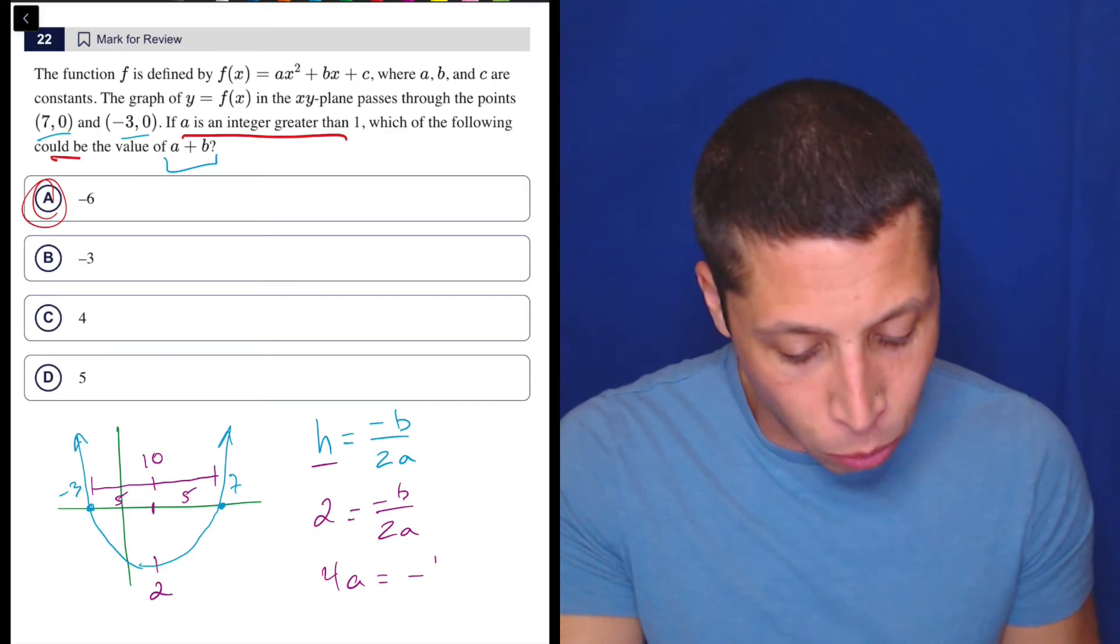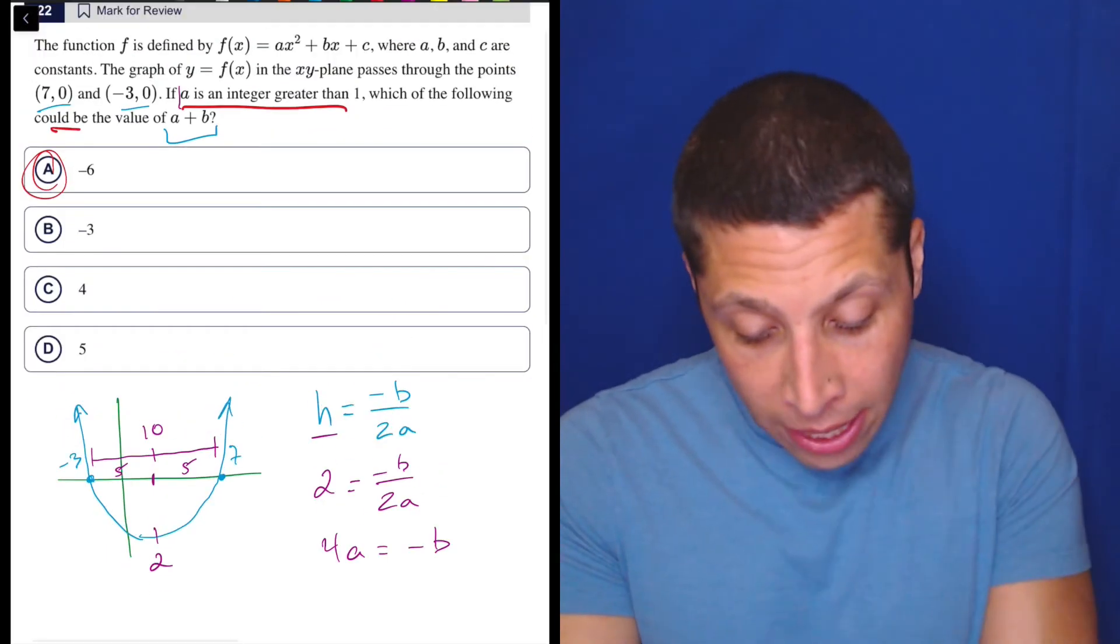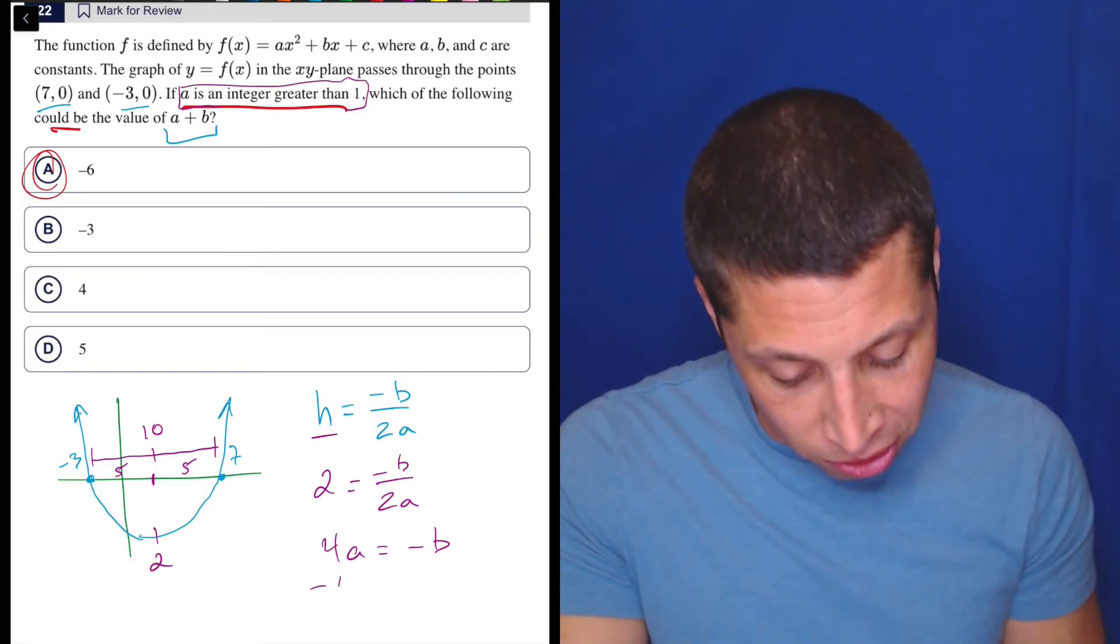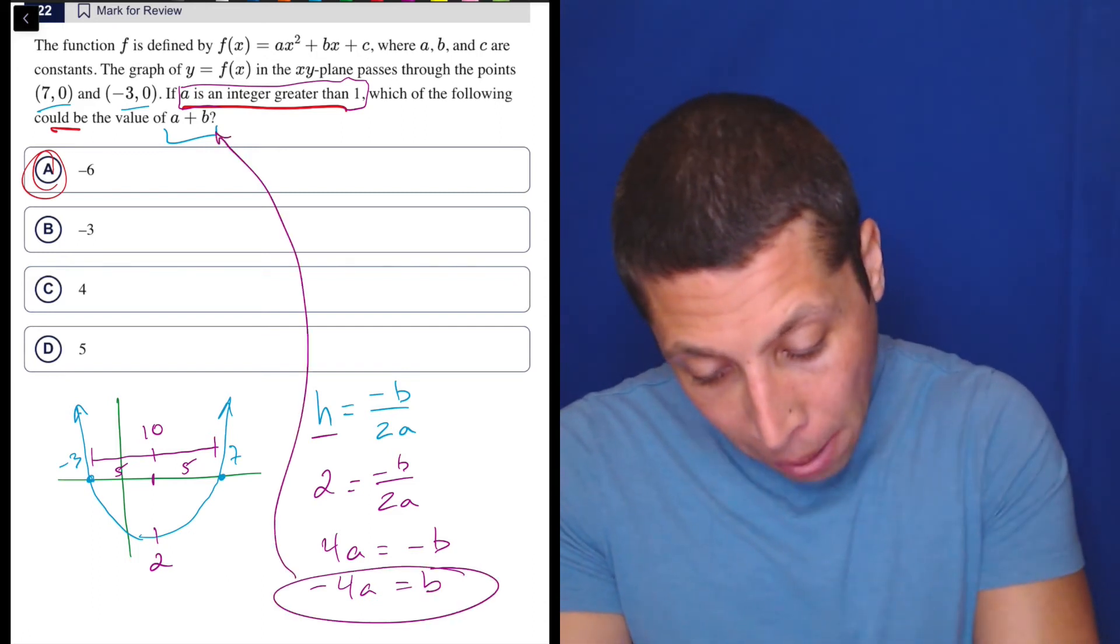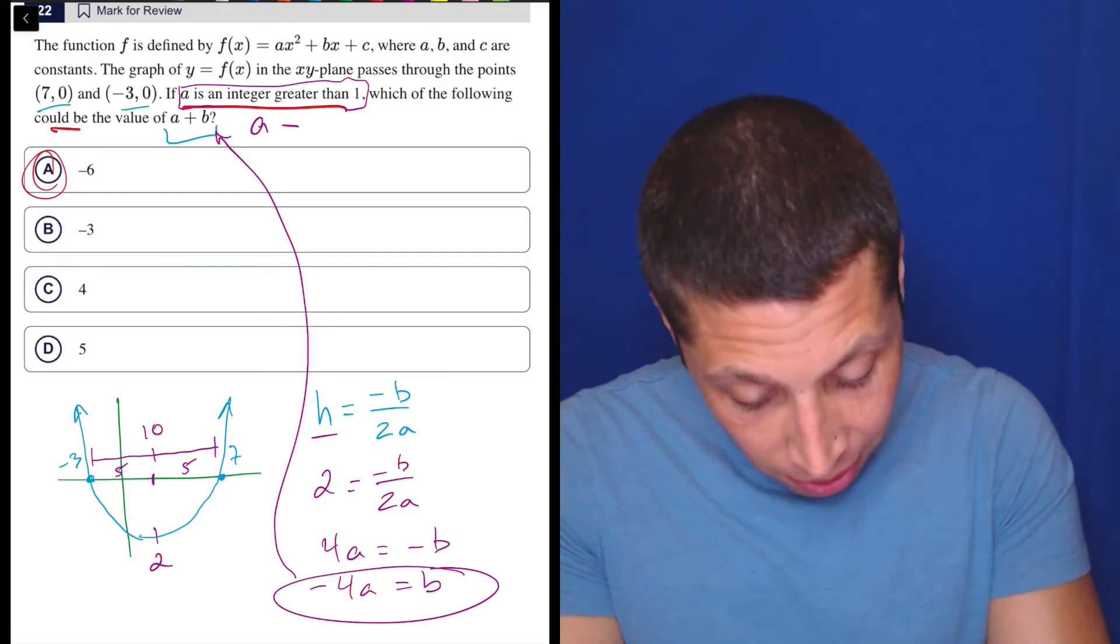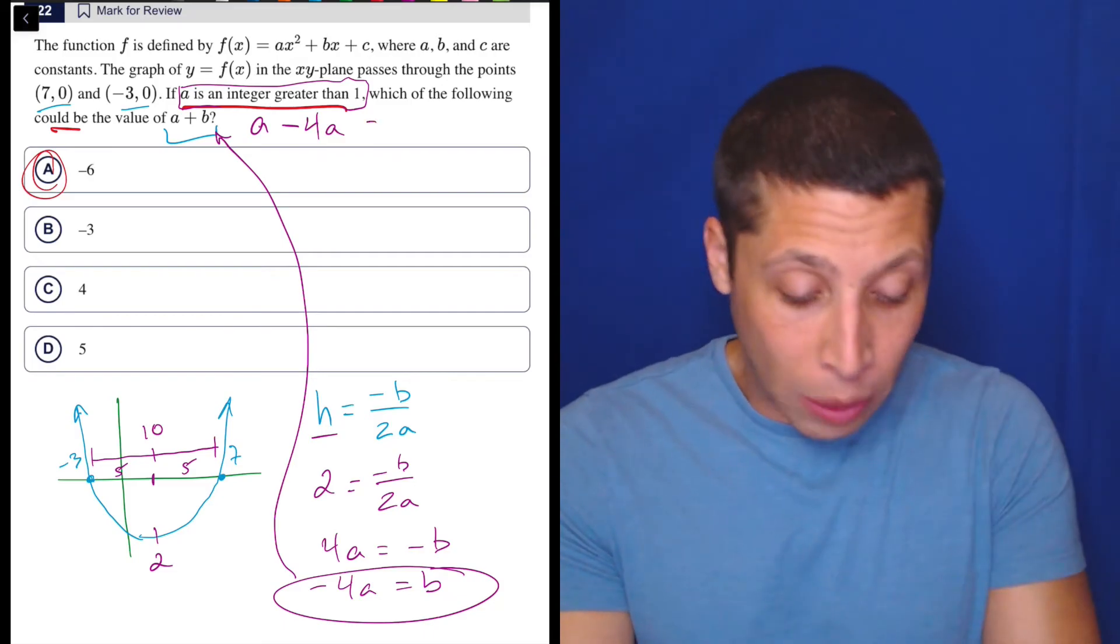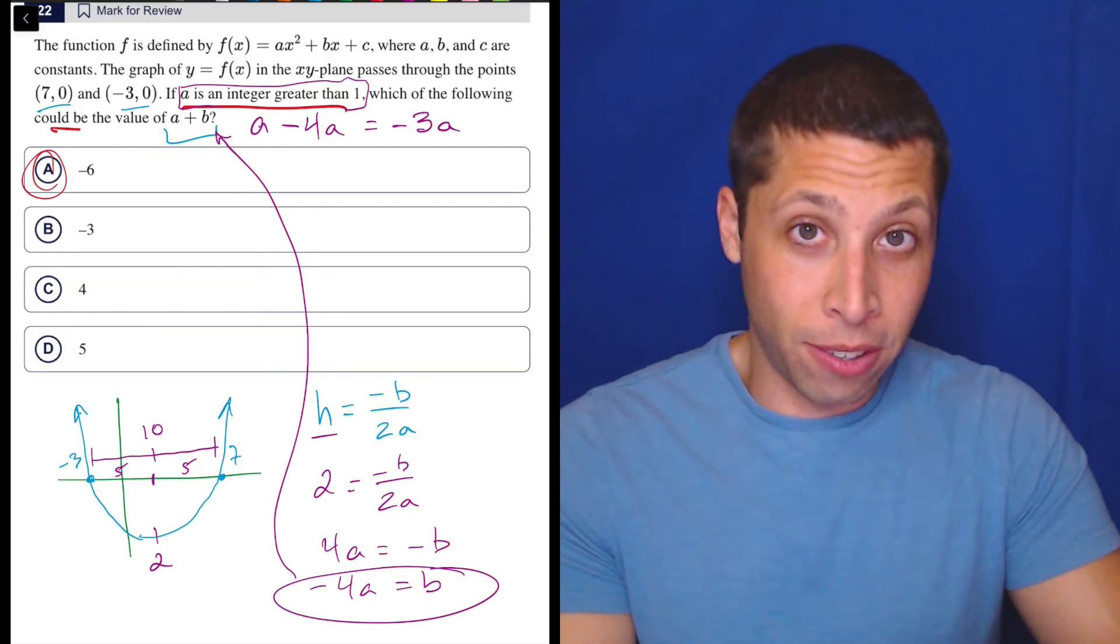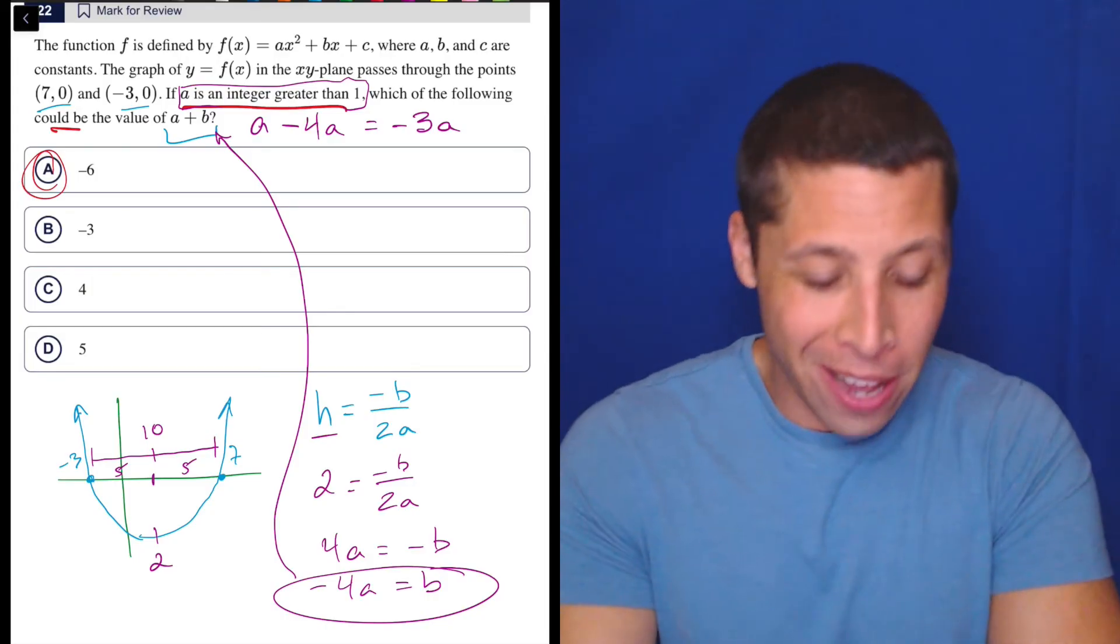So two is equal to negative B over two A. Let's just clean it up a little bit, right? So that's four A is equal to negative B. I would probably want to get rid of B because they gave me some information about A. So I'd say, all right, let's see if maybe getting rid of B helps. So let's just make it negative four A is equal to B. And now let's take this and pop it in here, right? So that means that A plus a negative four A, right? So A minus four A is what we're looking for, which we can reduce to negative three A.